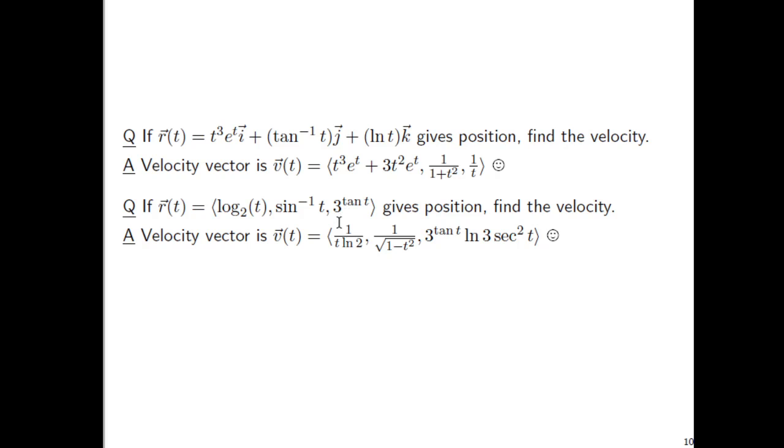And then here, lots of things are going on. I guess you're going to need the chain rule. So, 3 to the tangent of t times ln of 3. So, this is composing the derivative of the outside with the original inside undifferentiated. And then we finally multiply by the derivative of the inside function. That's why the secant squared of t appears.